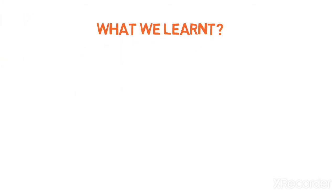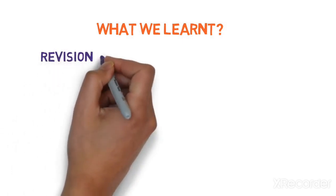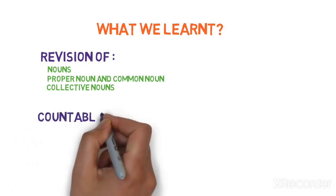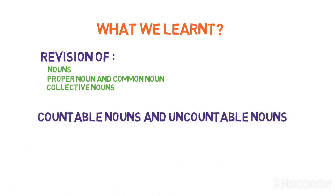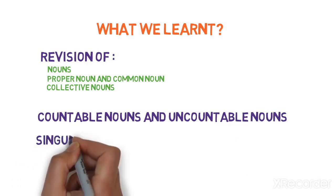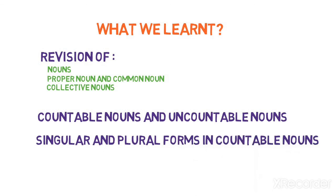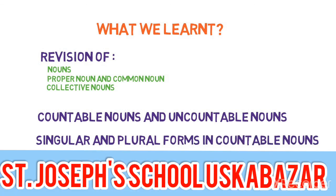What we learnt in this video. Firstly we just had an overview of what we learnt previously, that is nouns. Then we recapped the two categories of nouns: proper noun and common noun, and collective noun. Then we looked at another category of nouns: countable nouns and uncountable nouns. And in countable nouns we saw two forms of nouns: singular forms and plural forms. That's all in this video.